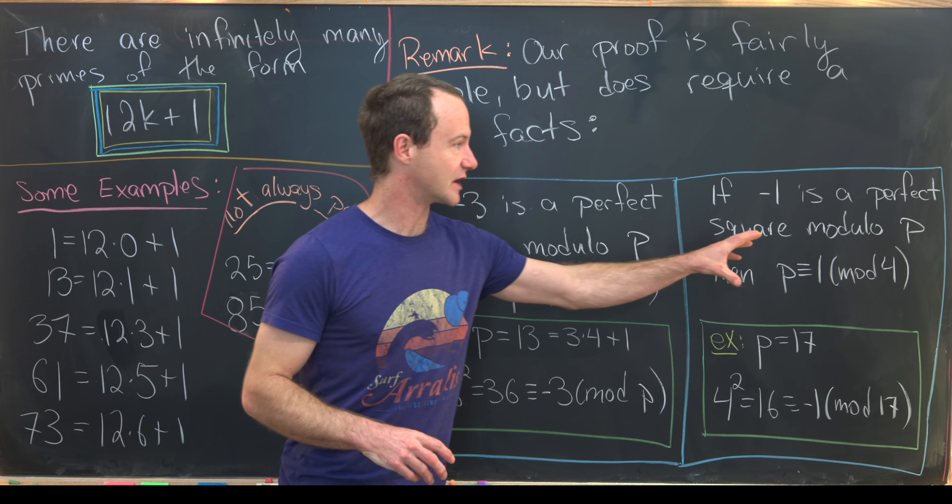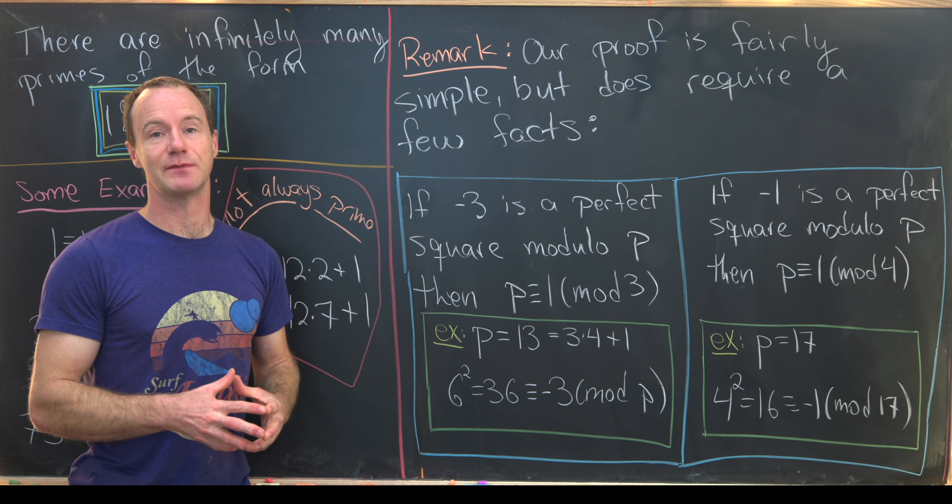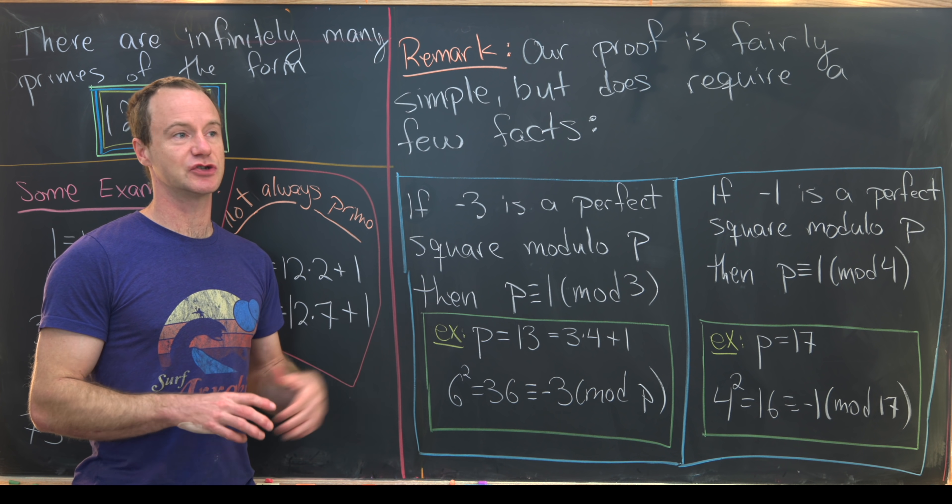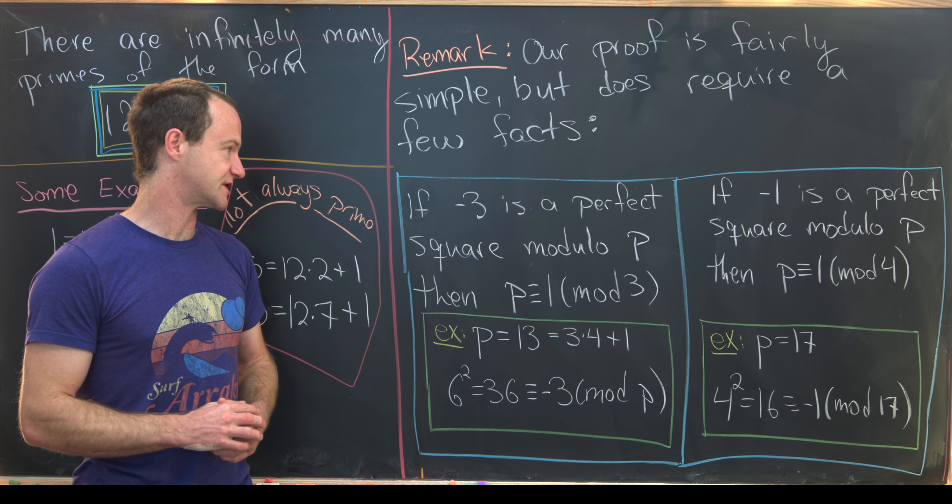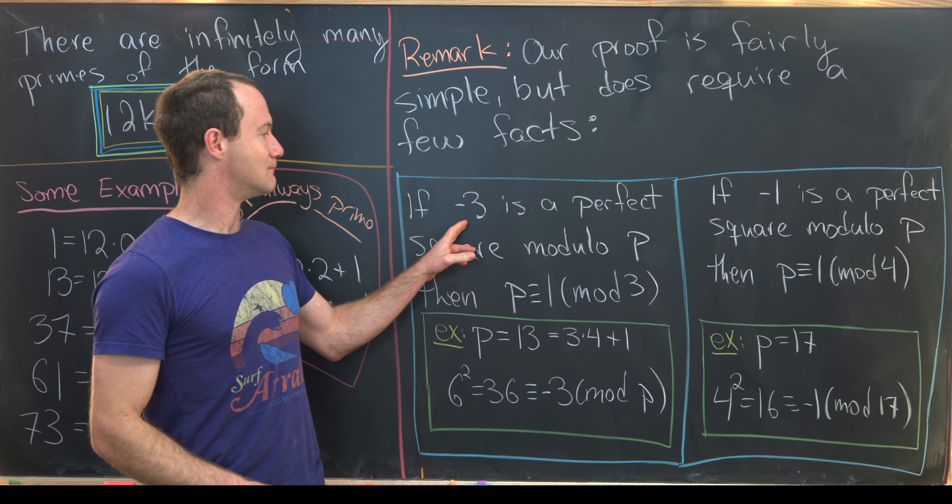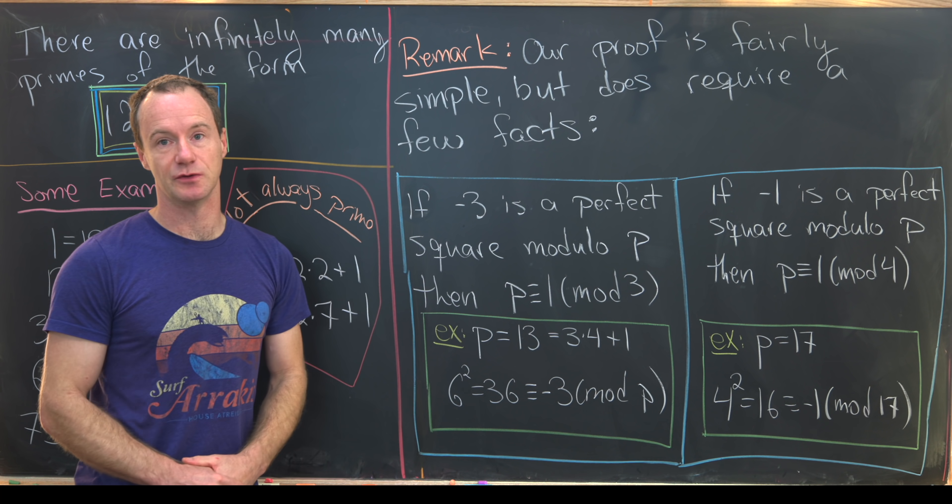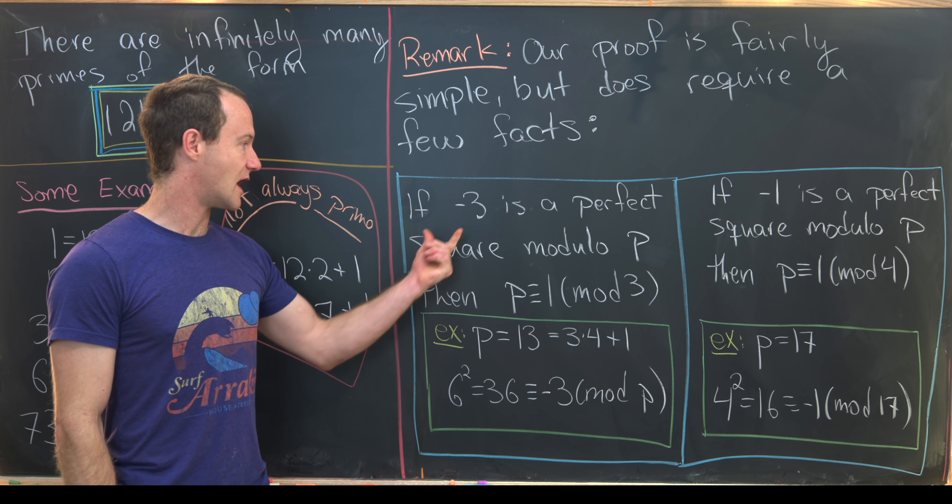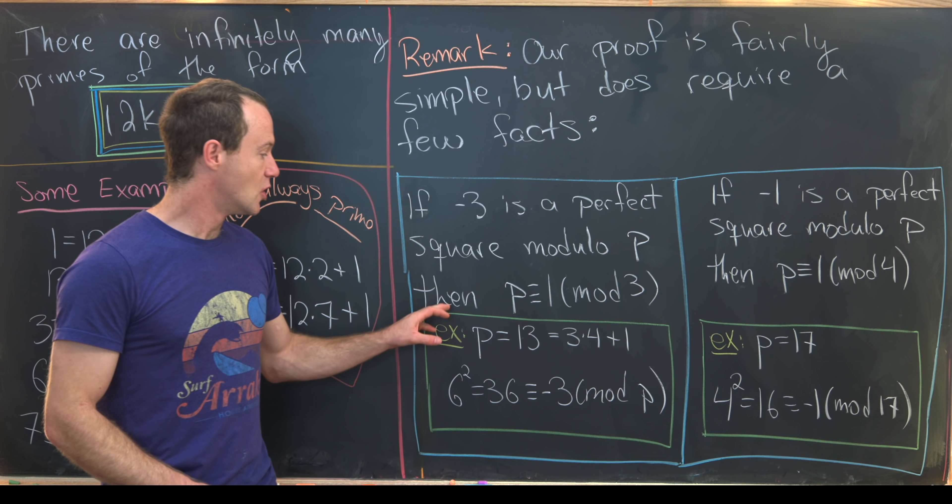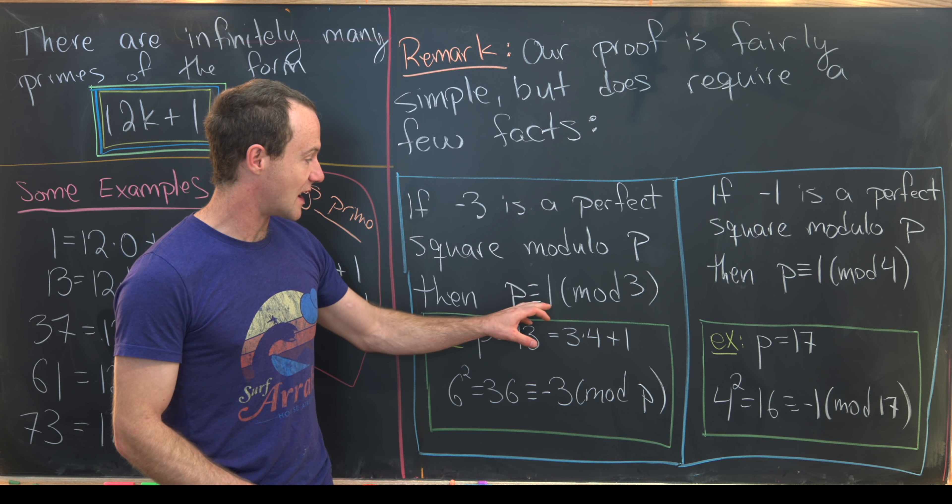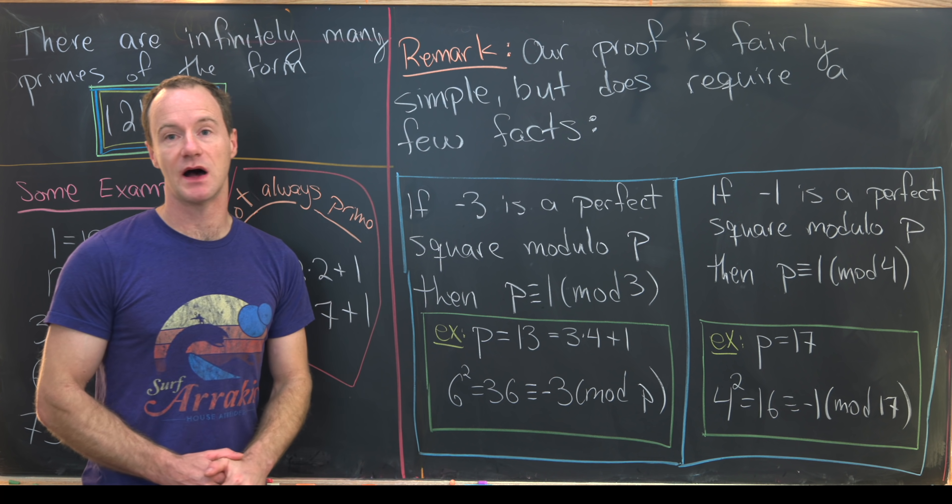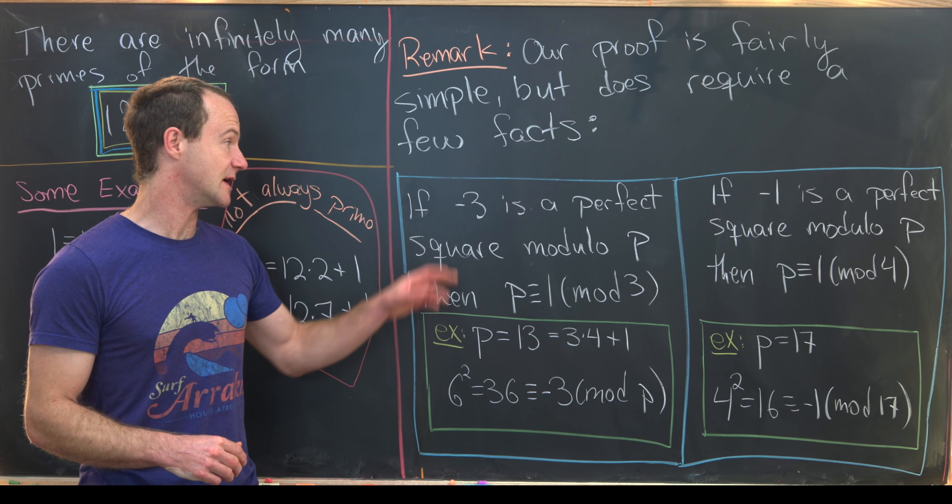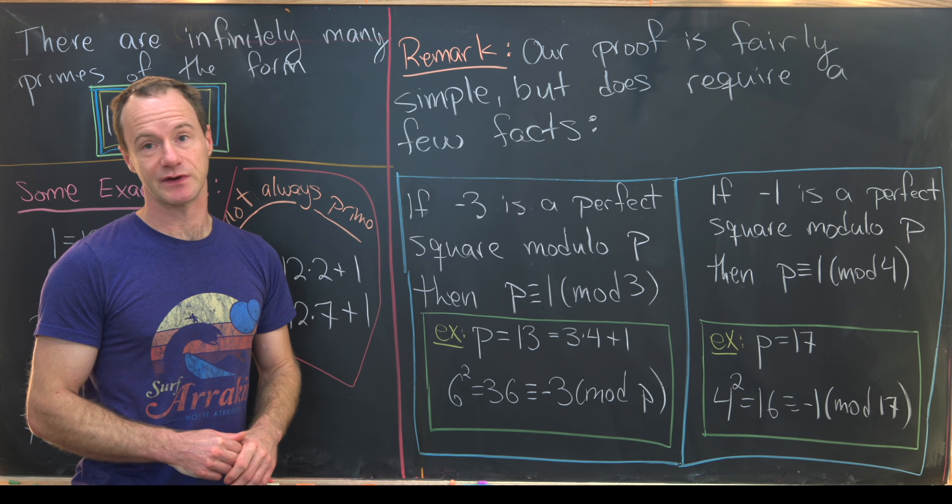The two facts that we're going to use have to do with when something is a perfect square. And this would be categorized under the notion of quadratic residues if you want a keyword to search. So if minus 3 is a perfect square modulo p, in other words, we've got a prime and mod that prime, negative 3 happens to be a perfect square. Well then that means this prime must be 1 mod 3. It's impossible for this prime to be equal to 2 mod 3 and allow minus 3 to be a perfect square.